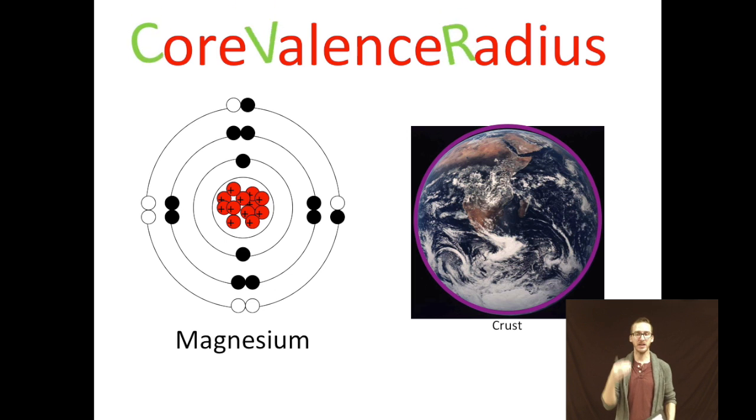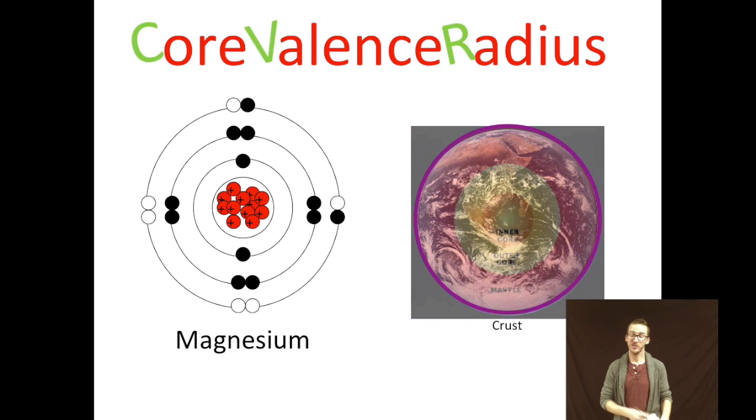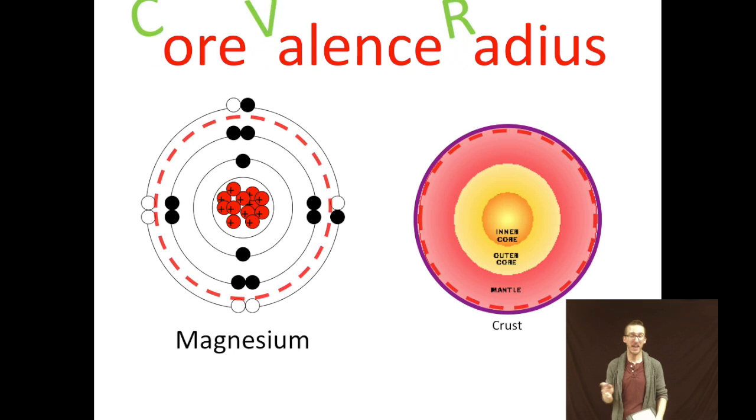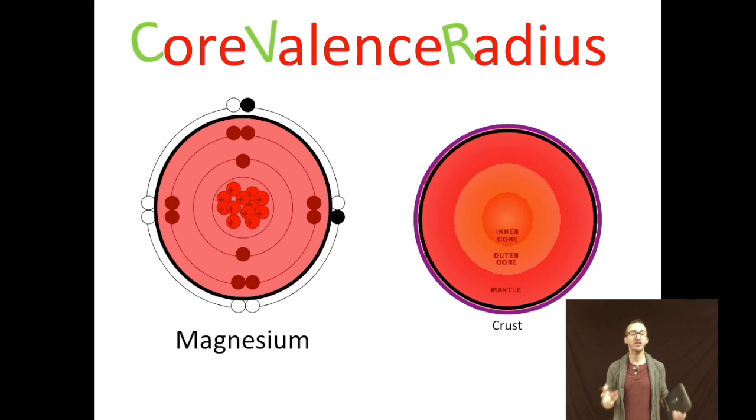Again, come back to the analogy I made of the earth cut in half—your valence level is your crust level, we're separating that from everything else. Everything else we're going to say is the core of our atom, and we're simply going to assign everything inside the valence level a charge.